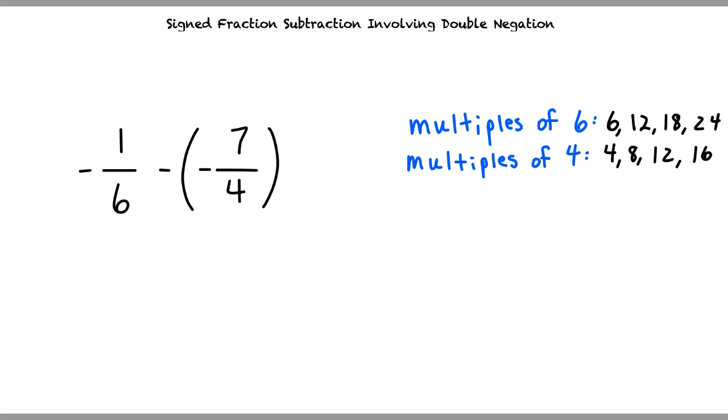Looking at the multiples of our denominators, what could our least common denominator be? Well, the lowest multiple that each of our denominators have in common is 12. So 12 would be our least common denominator, right? That's exactly right.